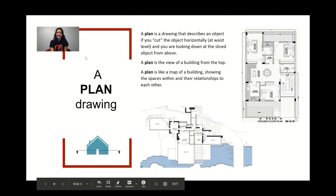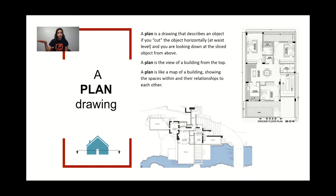Let's get started with a plan. A plan is a drawing that describes an object if you cut the object horizontally. Typically, the building is cut at waist level, or about three feet from the ground, and you're looking down at the sliced object from above. A plan is also a view of a building from the top and shows the spaces within the building and their relationship with each other.